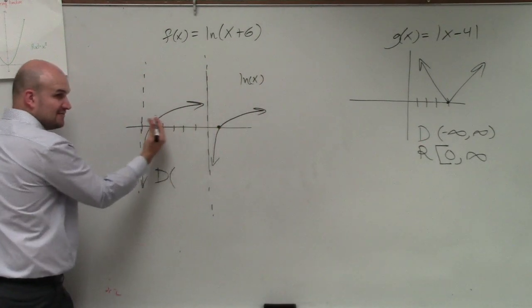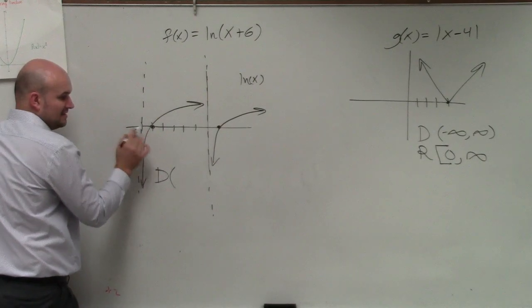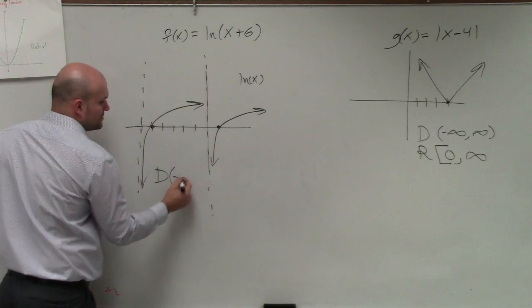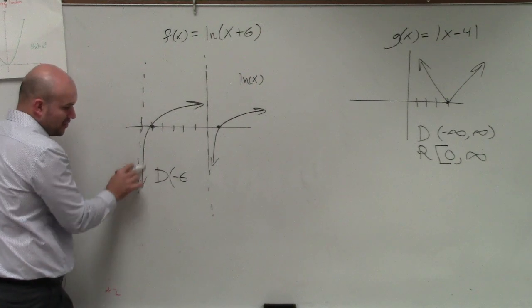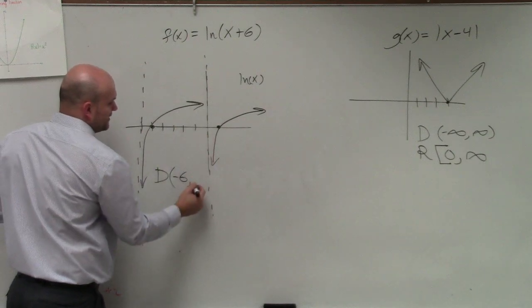My domain is how far this graph goes to the left. Well, 1, 2, 3, 4, 5, 6. So it goes to the left as negative six, but does it approach negative six? No. And then it goes all the way to infinity.